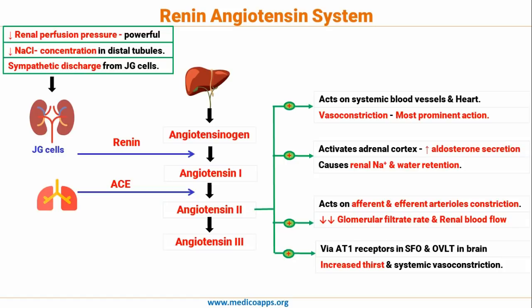Those are the four critical functions of angiotensin 2. Angiotensin 2 is converted into angiotensin 3, which has only 40% of the pressure activity of angiotensin 2 but has 100% of the activity in terms of aldosterone formation. So angiotensin 3 will act on the adrenal cortex to increase aldosterone secretion and also has 40% of the vasoconstriction and pressure activity of angiotensin 2.